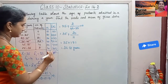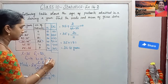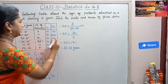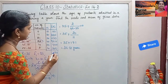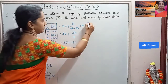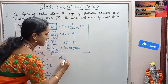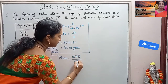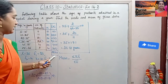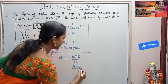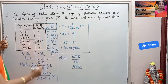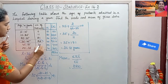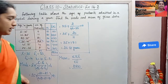Now we add all the FiXi values. Adding them we get 2830. For mean using the direct method, the formula is Sigma(Xi·Fi) divided by Sigma(Fi). Sigma(Xi·Fi) is 2830. Adding the frequencies Sigma(Fi), we get 80. So mean equals 2830 divided by 80.